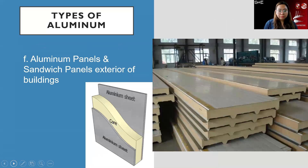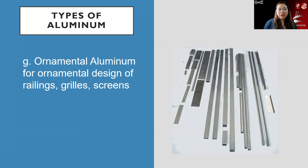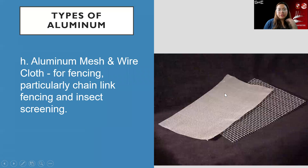Aluminum panels and sandwich panels are usually used for building exteriors. The section consists of aluminum sheets with a core — the sandwich panel has a filling inside, usually foam or styrofoam, depending on the manufacturer. We also have ornamental aluminum for decorative designs such as railings, grills, and screens. Aluminum mesh and wire cloth are used for fencing, screen windows and doors, chain link fencing, and insect screening.